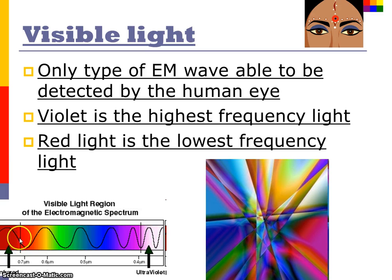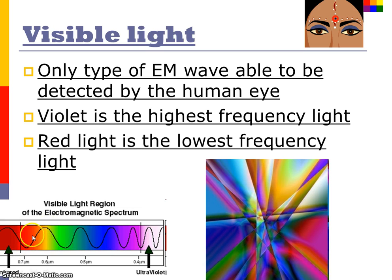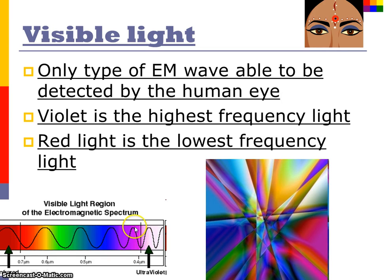Moving from left to right on the entire electromagnetic spectrum, we move from low frequency to high frequency. The visible light spectrum follows the same pattern — from low frequency, longer wavelengths, to high frequency, short wavelengths. Red, of course, is the lowest frequency, and violet is the highest frequency and the shortest wavelength of visible light.